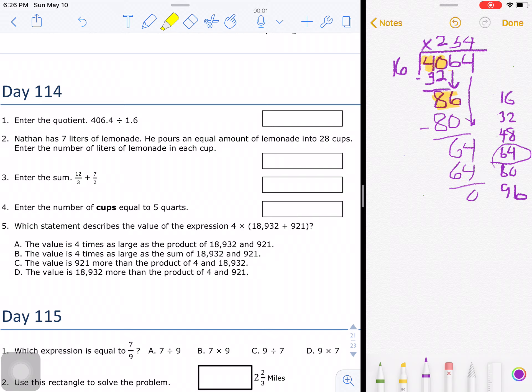So now we're going to check our answer. The way we check it is we take our quotient, which is 254, and we multiply it by our divisor. What I'm going to do is go back to my original divisor, which was 1.6, and I should come up with my original dividend. So here we go.